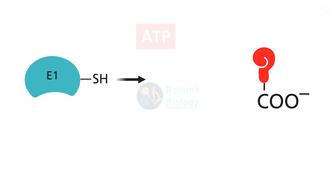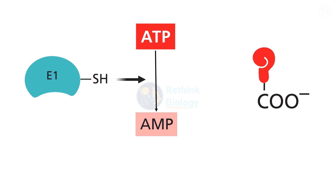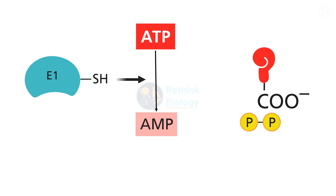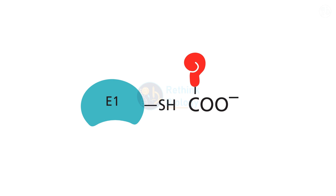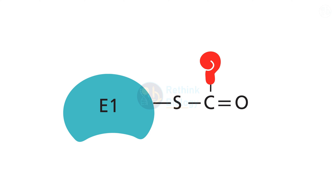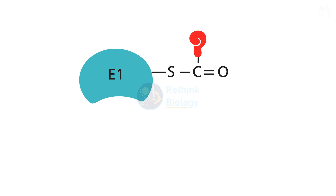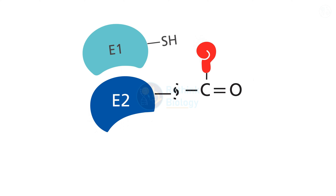E1 uses ATP to activate the carboxyl end of ubiquitin and attach it to a cysteine residue on E1, forming a high-energy thioester bond. This activated ubiquitin can then be transferred to another cysteine residue on E2.